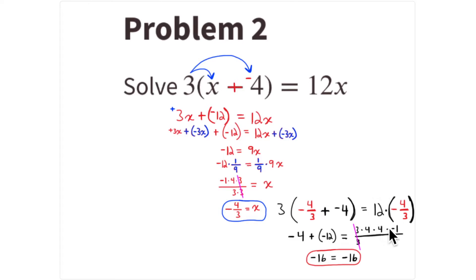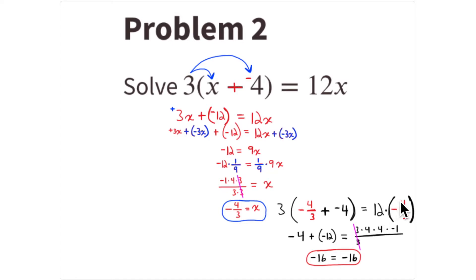Another way to see this: 4/3 of 12. Think of it as 1/3 more than 3/3 of 12. One third of 12 is 4, so 4/3 of 12 is 1 third more than 12: 12 + 4 = 16, and it's the negative of that, so -16. Counting by thirds of 12: 1/3 is 4, 2/3 is 8, 3/3 is 12, 4/3 is 16. So -16, confirming the answer.